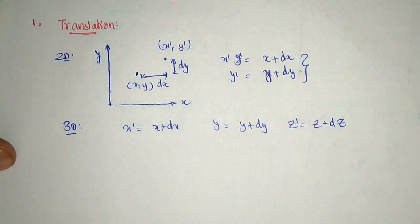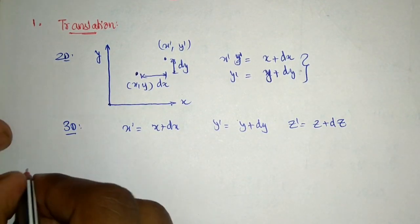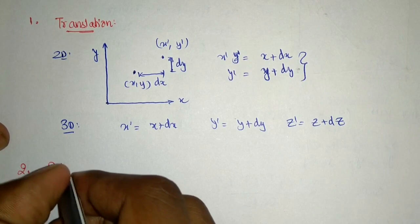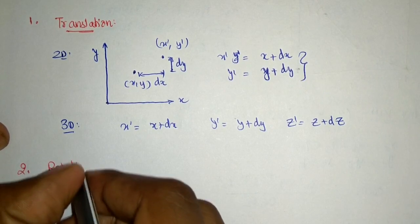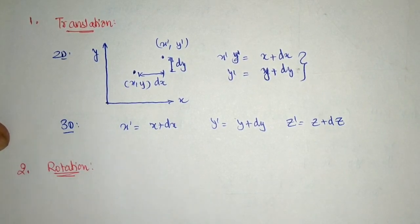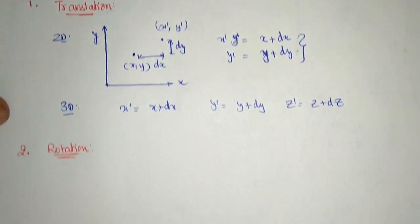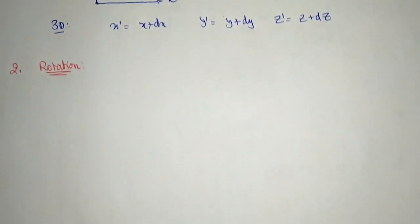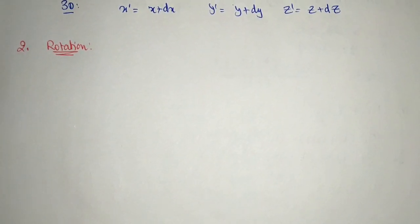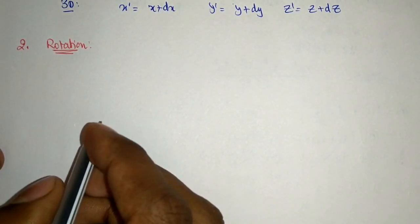The second basic transformation is rotation. Rotation and translation are the ones we will usually have questions from, but we are going to look at other basic transformations as well in order to have a complete idea.